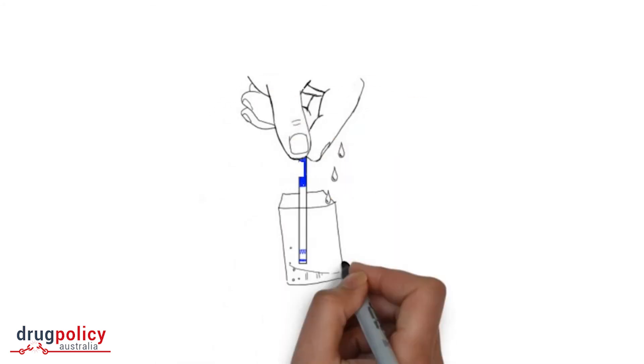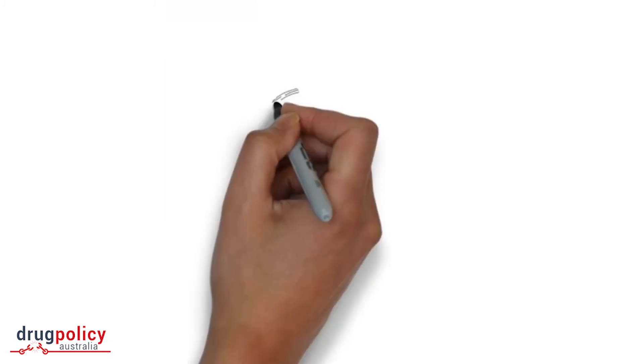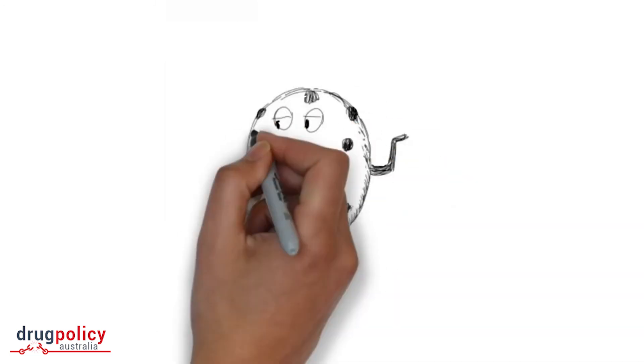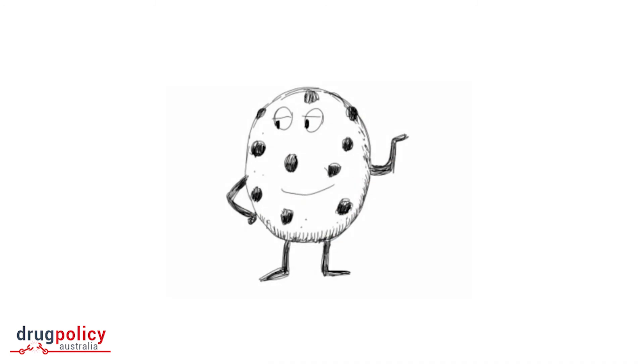If pills are your thing, you want to crush and mix them first. Fentanyl does something called chocolate chipping. When pressed into a pill, it tends to bind to itself, so you want to mix them first and get the best results.